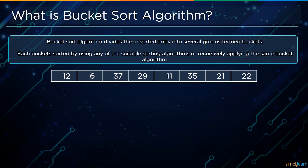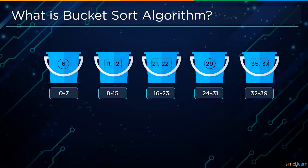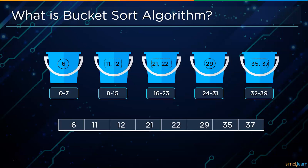We will create some buckets with different ranges: 0 to 7, 8 to 15, 16 to 23, 24 to 31, and 32 to 39. So 6 goes into the first bucket; 11 and 12 go into the second bucket; 21 and 22 go into the third bucket; 29 goes into the fourth bucket; and 37 and 35 go into the last bucket. All elements are then sorted in ascending order, giving the final result: 6, 11, 12, 21, 22, 29, 35, and 37.